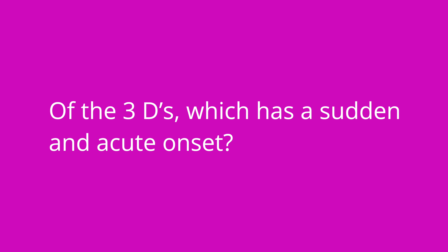Of the three Ds, which has a sudden and acute onset? Delirium has a sudden and acute onset. Dementia's onset is more gradual and progressive, and depression is a mood change that lasts at least over two weeks.